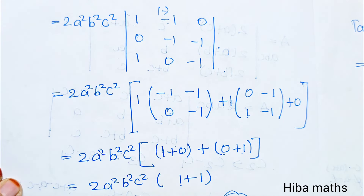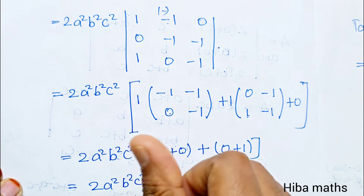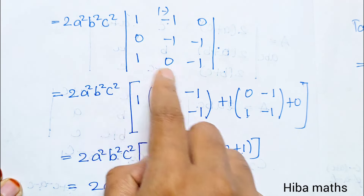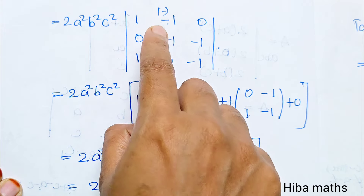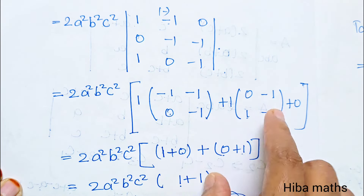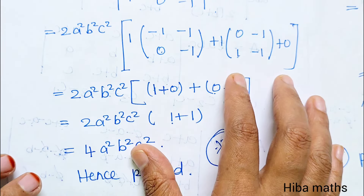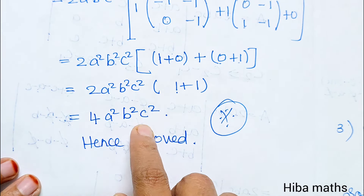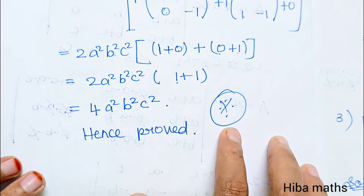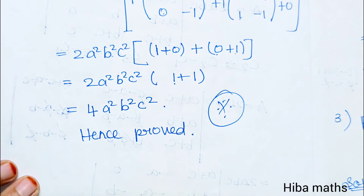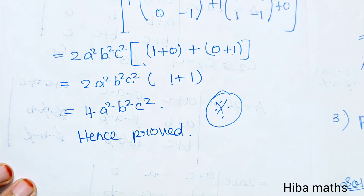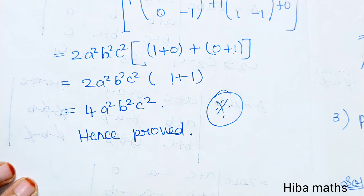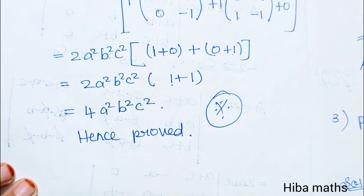So 2 times of A²B²C², given matrix: 1 into minus A, minus plus 1 into the same — we have two answers. 2 twos are 4, A²B²C² — hence proved. The proofs are important. If you have doubt, write in the comment section. Thank you so much for watching.